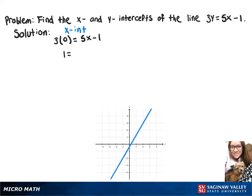And then when we add 1 to both sides, we'll get 1 equals 5x, and then divide both sides by 5, and one-fifth is our x-intercept. So that point will be one-fifth, 0.